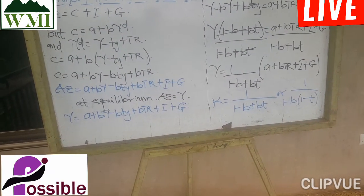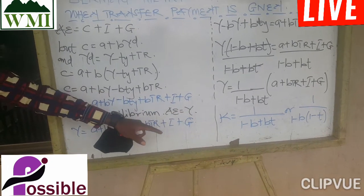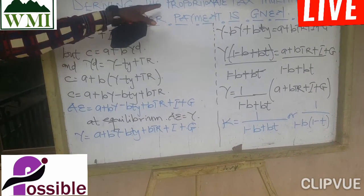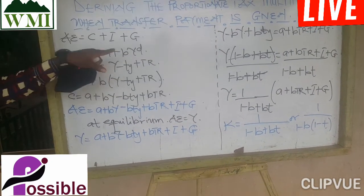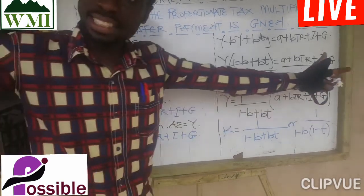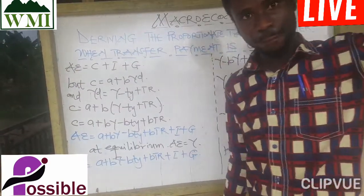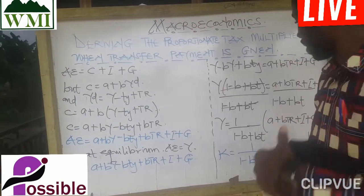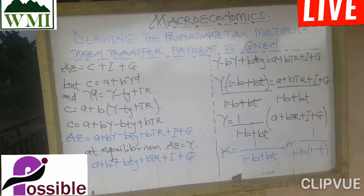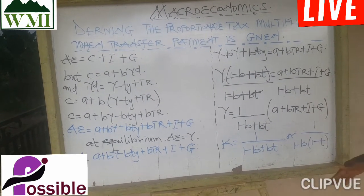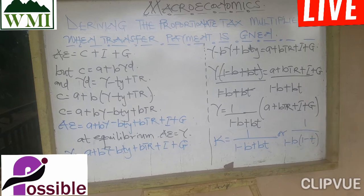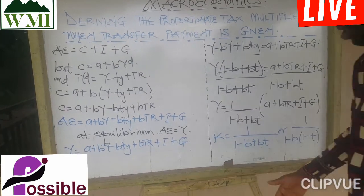That is the general multiplier. Now we are going to look at the individual multipliers under the proportionate tax multiplier when transfer payment is included. It is going to be similar to the first case — the difference or change would only be in the transfer payment component.